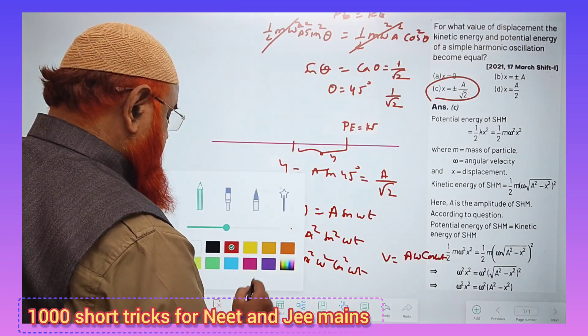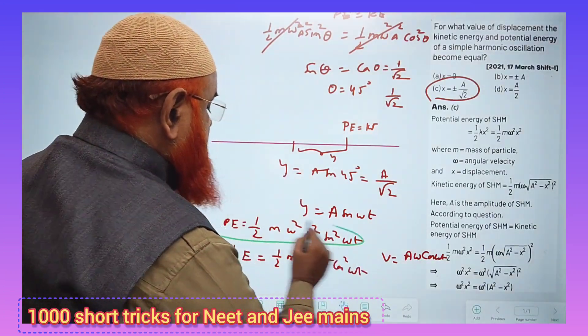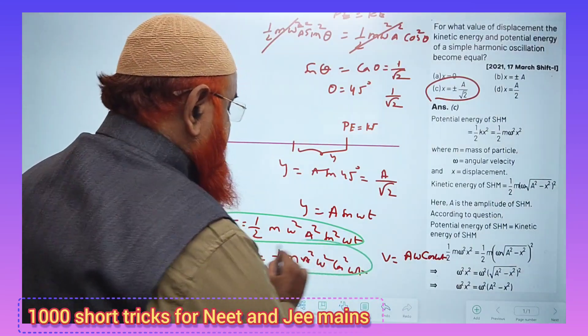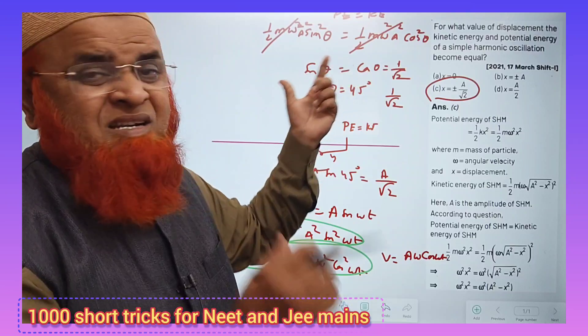So, potential energy formula is, this is going to be potential energy formula. This is going to be the kinetic energy formula in terms of trigonometry. Make them equal and find that the